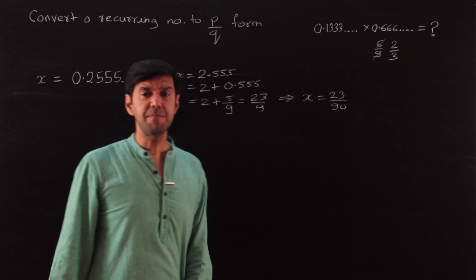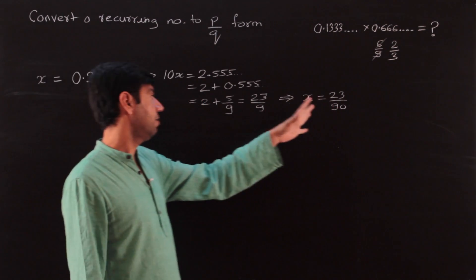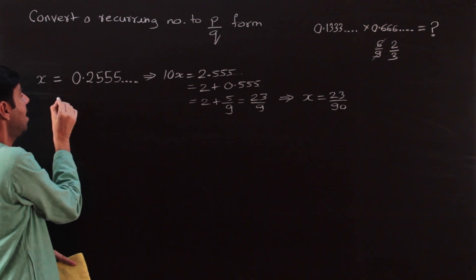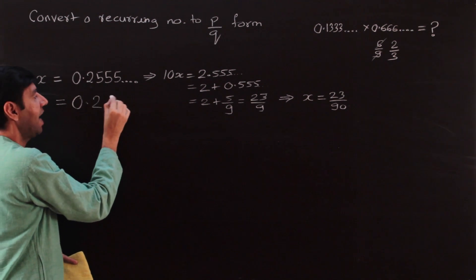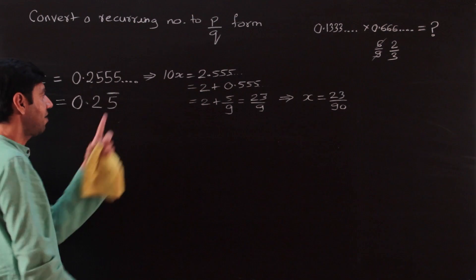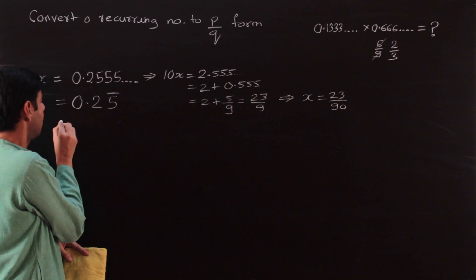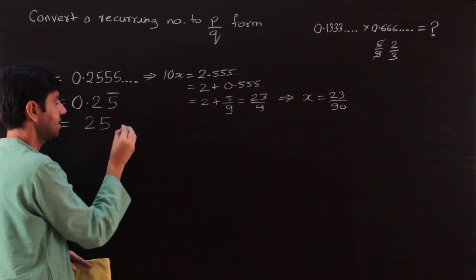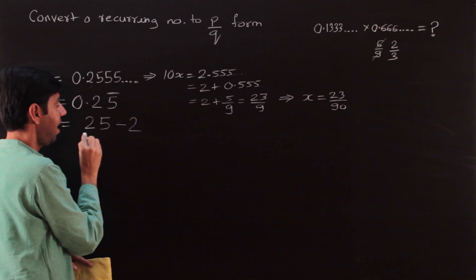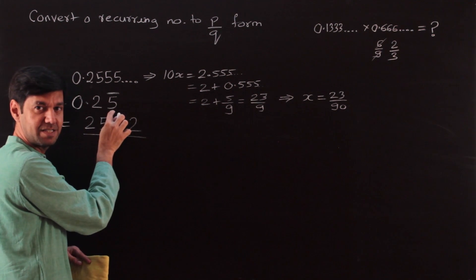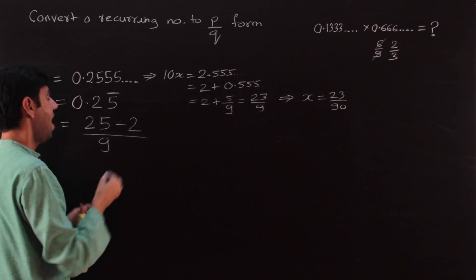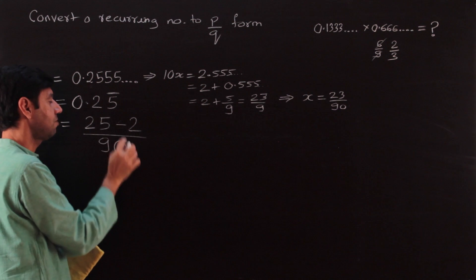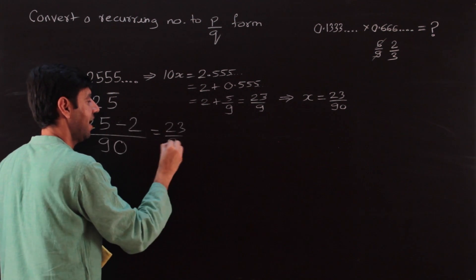Rather than doing this whole working each time, you can reverse-engineer it and write the answer in one shot. For a number with a non-recurring part and a recurring part: write (whole number with recurring part written once) minus (non-recurring part), divided by (as many 9s as recurring digits, followed by as many 0s as non-recurring digits). For 0.2555...: (25 − 2) / 90 = 23/90. The 9 comes from one recurring digit, the 0 comes from one non-recurring digit.